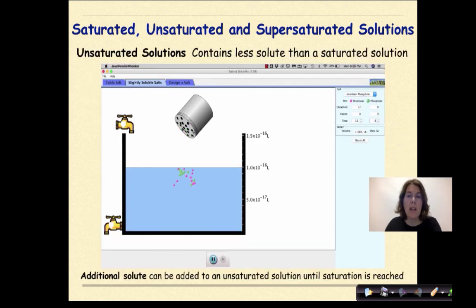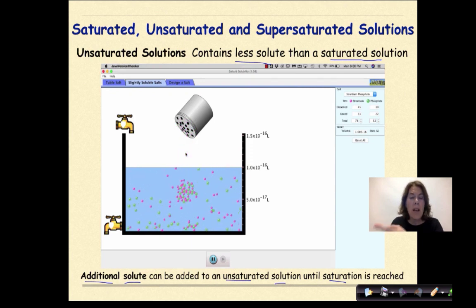Unsaturated solutions contain less solute than a saturated solution. So from this PhET simulation that you can see below, we're adding strontium phosphate in different shakes. And as we add it in, this ionic compound is separating automatically into strontium ions and phosphate ions. Additional solute can be added to an unsaturated solution until saturation is reached. And we see it right here, as that last shake goes in, those particles are not fully dissolving. So we have some excess solute on the bottom of our screen, while we also have other particles that have been dissolved.